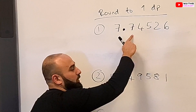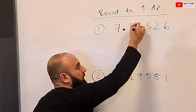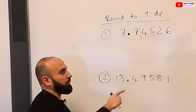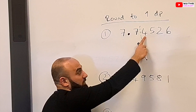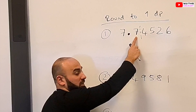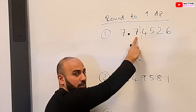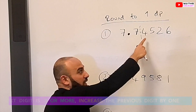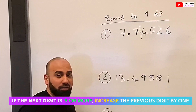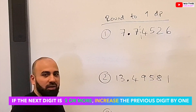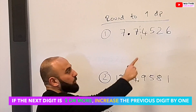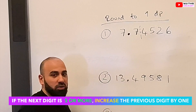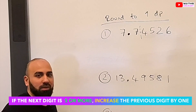We draw a line after the first number and we look at the number next to it. This number will help us decide if this number stays the same or if it increases to an 8. If this number is 5 and above — meaning 5, 6, 7, 8, and 9 — we'll change this number to 8, so your answer would be 7.8.